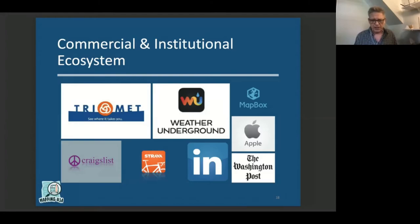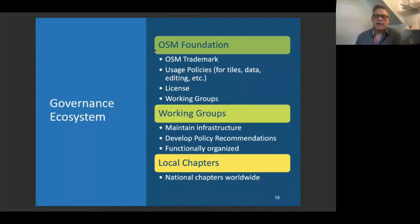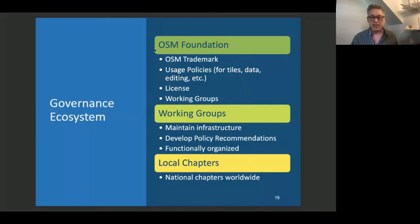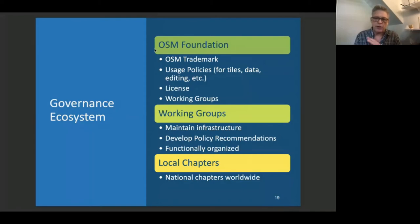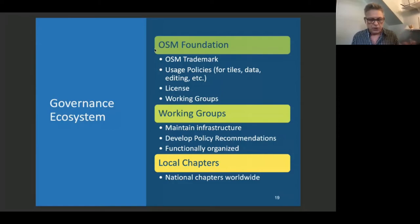There's a growing commercial and institutional ecosystem as well. What I want to focus on is the governance ecosystem, which has grown in importance with the advent of corporate mappers. There's been an increasing emphasis on policies around how to edit, how to access tiles, and usage of data. The OpenStreetMap Foundation maintains the trademark, the license, and working groups — including the data working group, which maintains data quality and adjudicates edit wars; the license working group; and the local chapters working group, which allows local chapters to represent the interests of their countries worldwide.